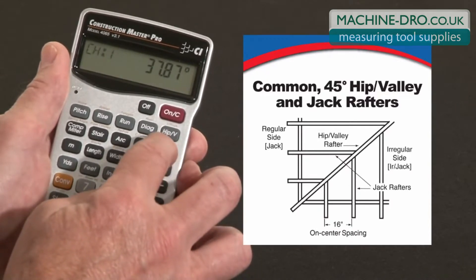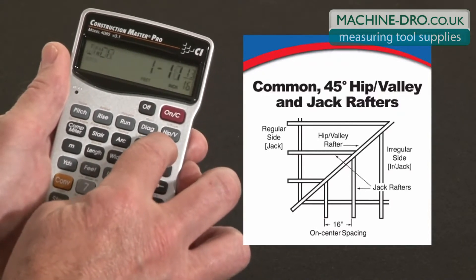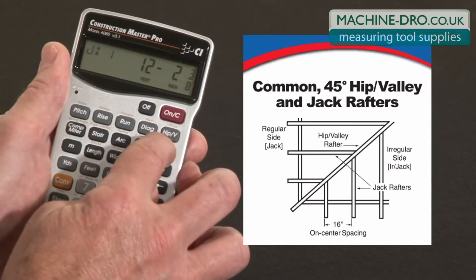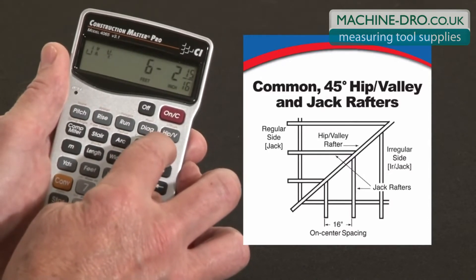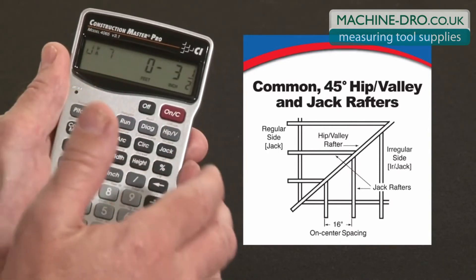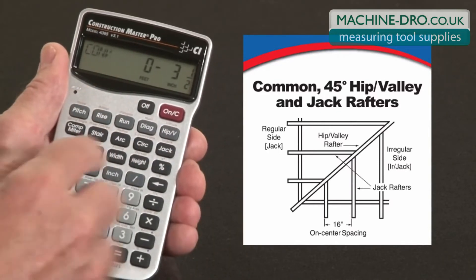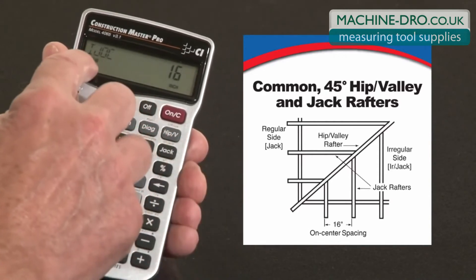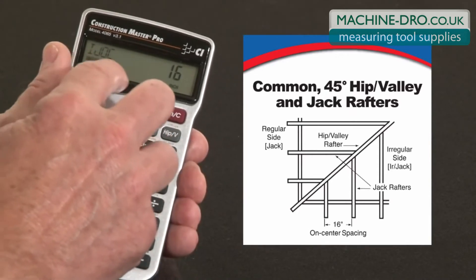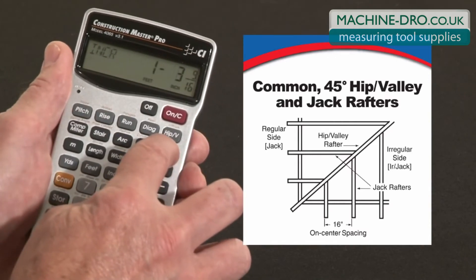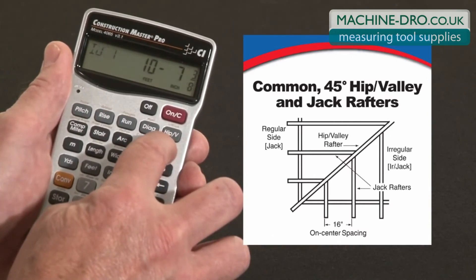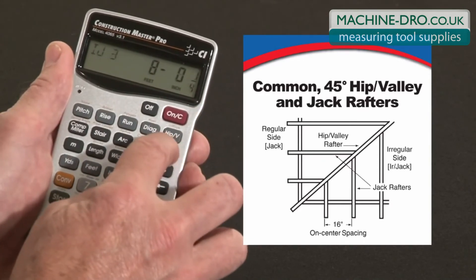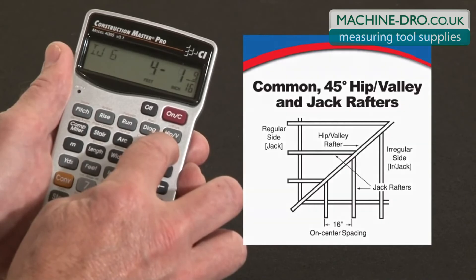Now I can also solve for all the jack rafters. Same on-center spacing. Here's the incremental change, and here are all the regular jack rafter lengths all the way down to the corner. To get the lengths of the irregular side jack rafters, I hit convert, and over the jack key it says irregular jacks. When I press the jack key, it shows the irregular jack on-center spacing — the same sixteen inches we're using. Press it again, there's the increment of change. Then it'll start with irregular jack number one, on down to the corner, giving the length of every single one of those jacks.